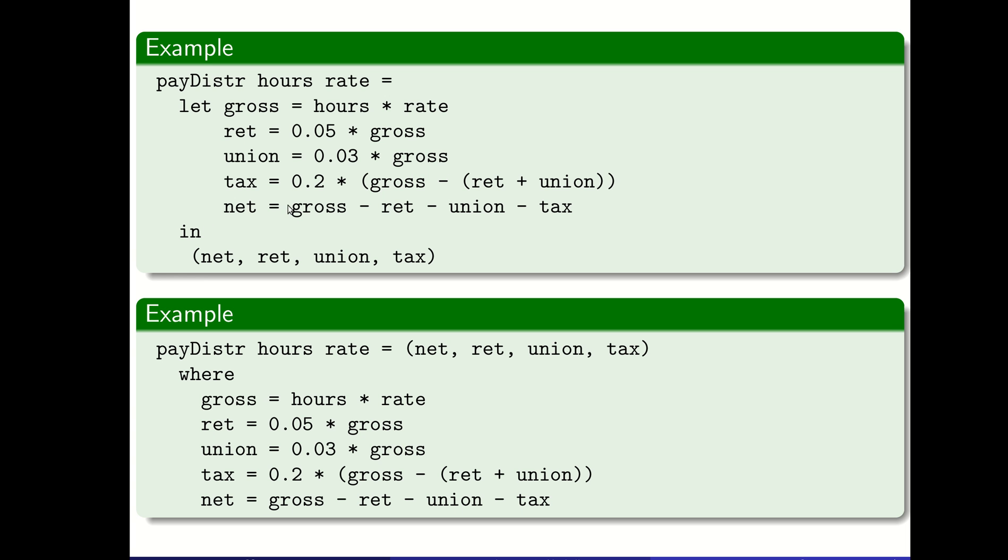The net is the gross minus all those other things. We're able to define multiple things and use those in the definition of later variables or functions. We state that those are used in this tuple we're going to return. Pay distribution will return this tuple of net, retirement, union, and tax—our full pay distribution.